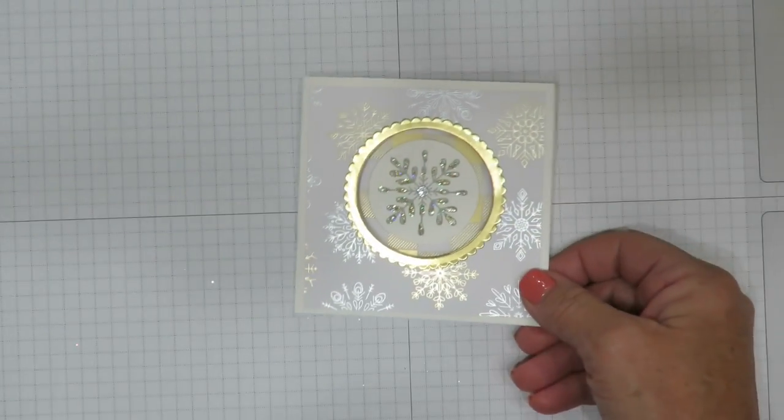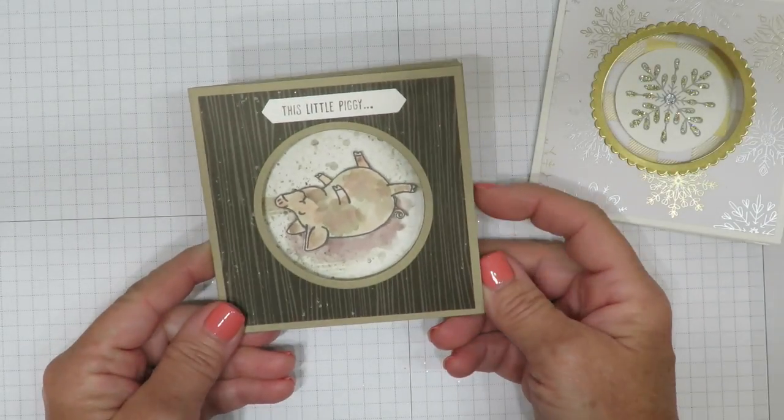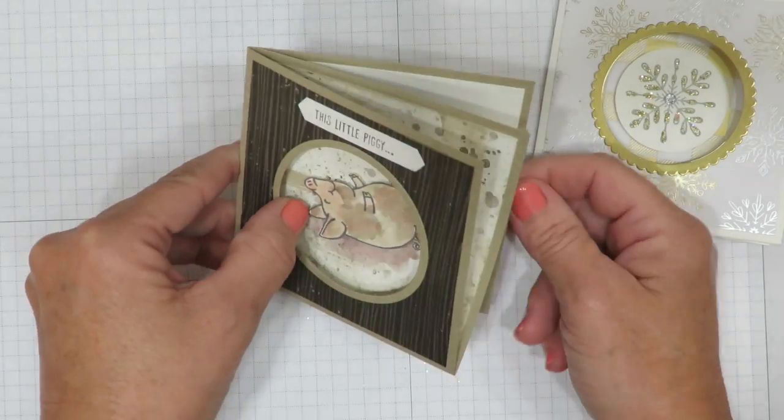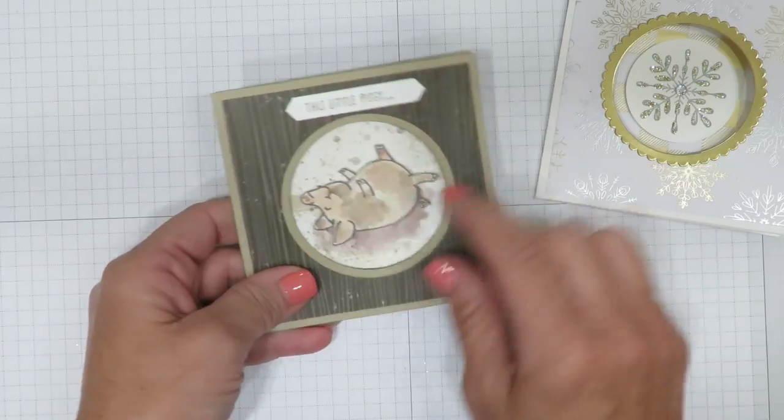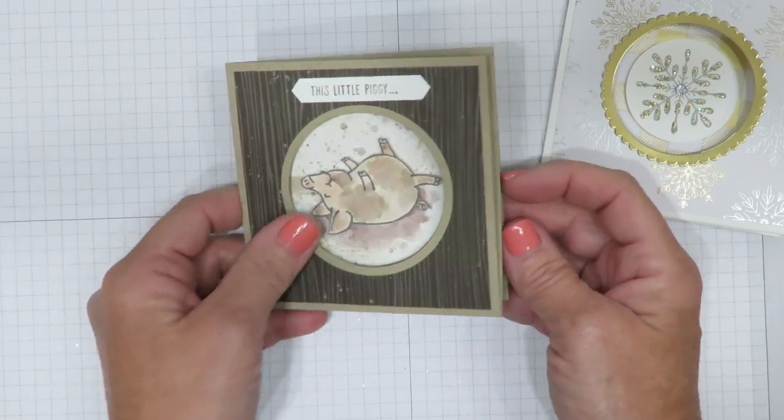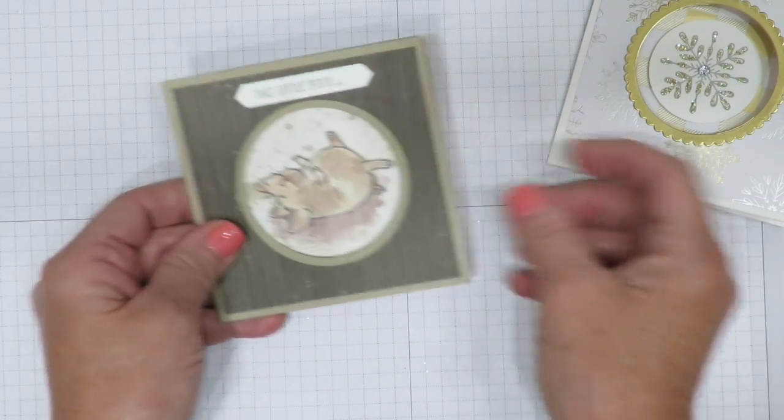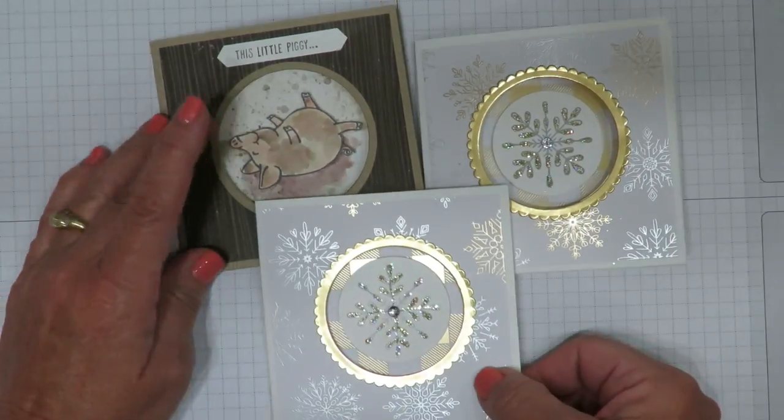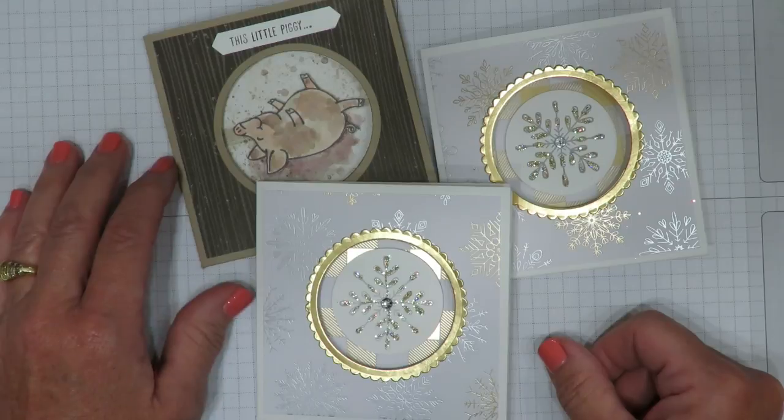I've got one more card to share with you that is not Christmas for those of you that think it's just a little bit too soon. This one uses this little piggy stamp set. Isn't this cute? My little pig running around in the mud. I want to thank my friend, Jill, who gave me the idea of this little pig upside down. I just think it's absolutely adorable. And I think it works really well with this fold. Here's the card we created today. The one I created before you joined me. And of course, the alternate this little piggy card.